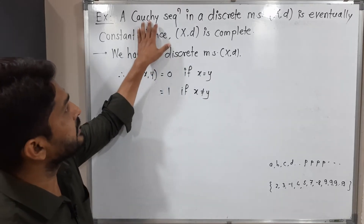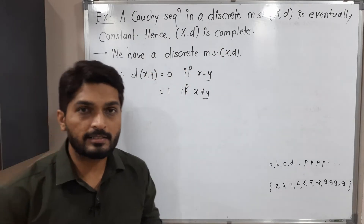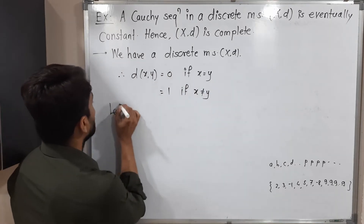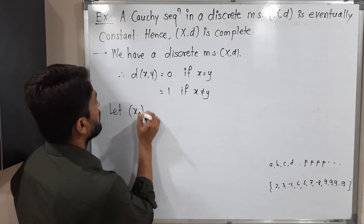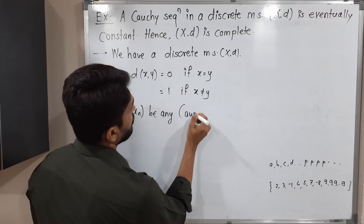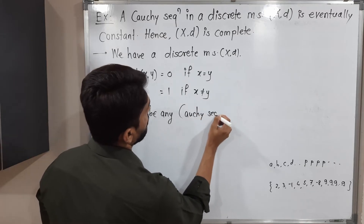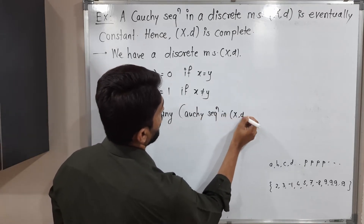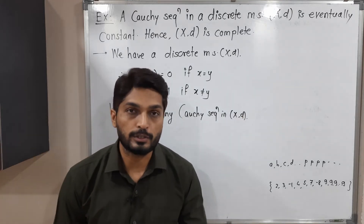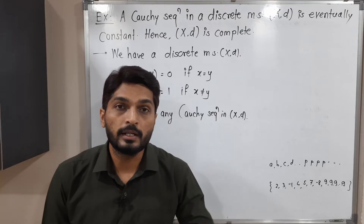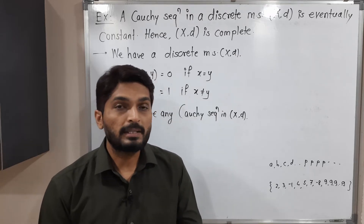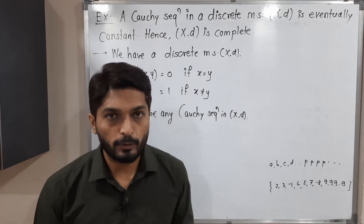We have to prove every Cauchy sequence is eventually constant. Let x_n be any arbitrary Cauchy sequence in X_d. We have to prove that it is eventually constant. I am going to use the definition of Cauchy sequence, and here I will take epsilon equal to 1/2.